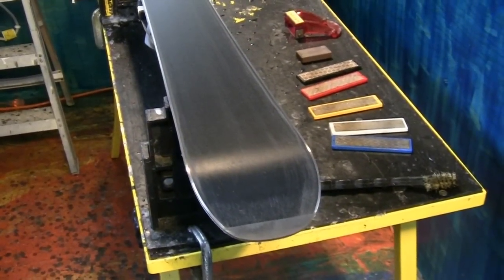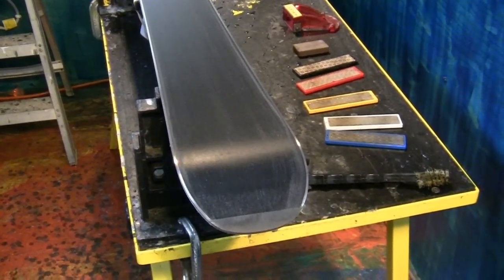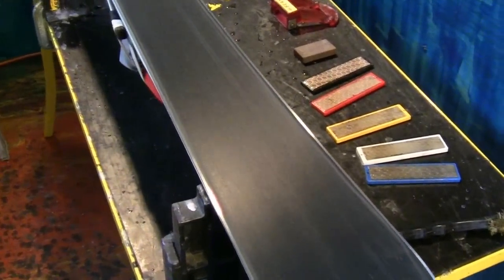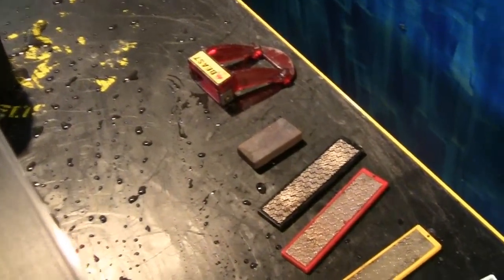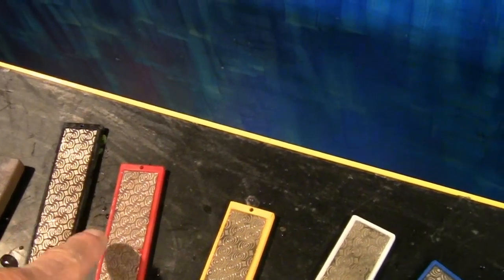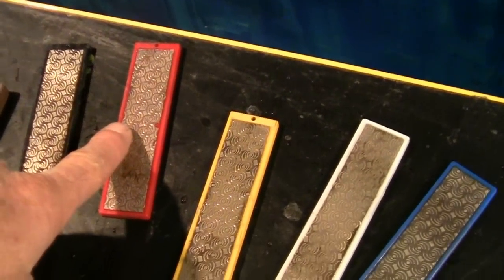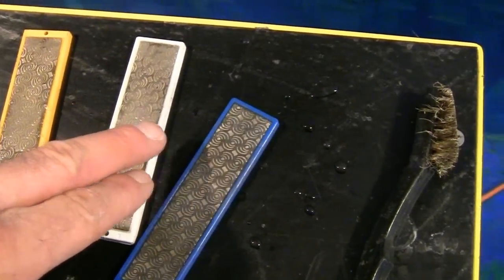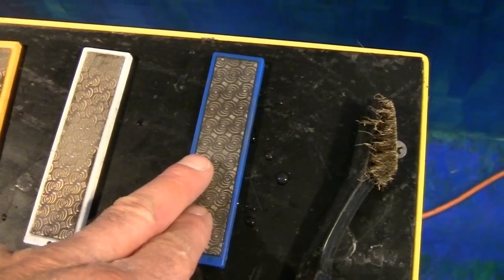Okay folks, we've taken the ski through the filing of the base edges and the side edges, and then took it through a progression of stones starting from a coarse 100, then we went to a 200 stone, a 400 stone, a 600 stone, and then a 1500 stone.